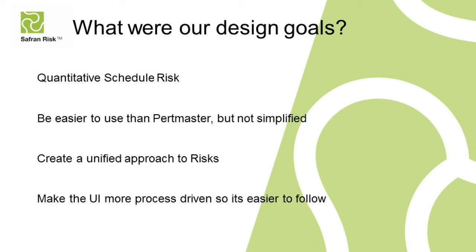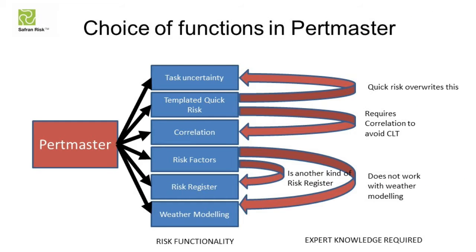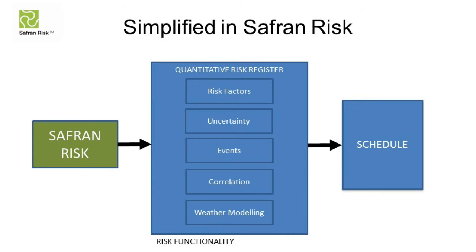What I mean by that is, for example, in PertMaster you had all these potentially conflicting ideas, like risk factors. In Saffron Risk, there is just one quantitative risk register, and that contains all of the risks and uncertainty — events, factors, weather modelling, correlation. It's all defined in one place, which makes it a much more coherent and, I guess, a grown-up way of looking at the problem.